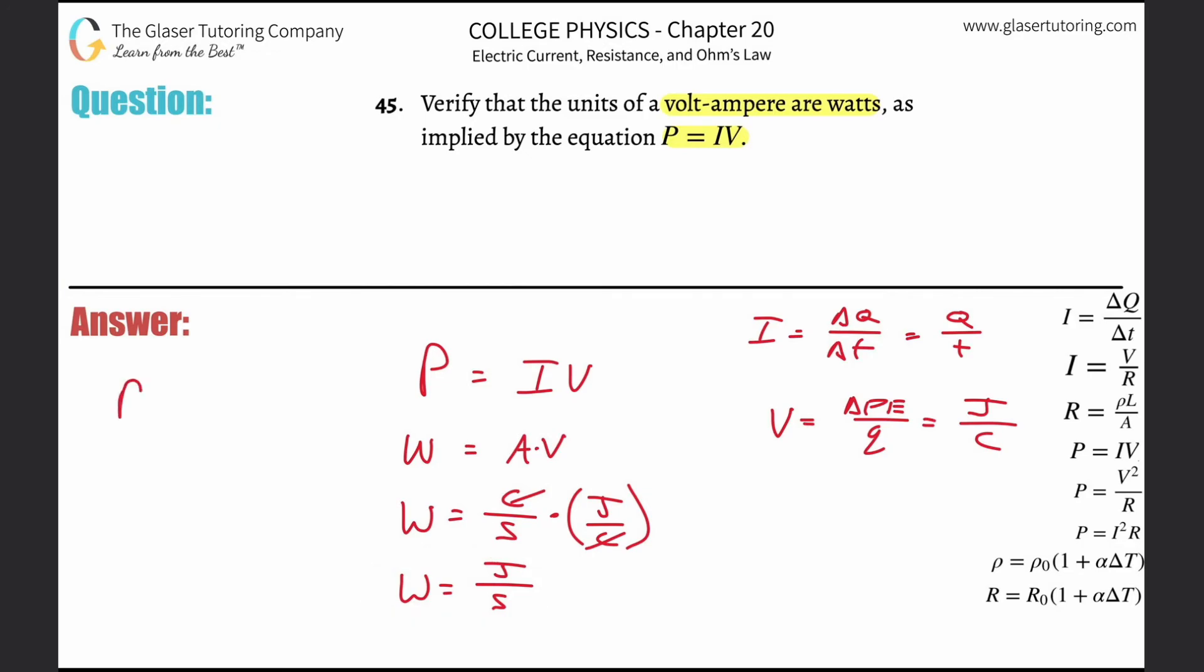Power equals the rate of energy transferred divided by the time over which it took to transfer that energy. The unit of energy is joules, the unit of time is seconds. So a watt is the same as joule per second. Joule per second equals joule per second. So that verifies the relationship that watts equals volt-ampere.